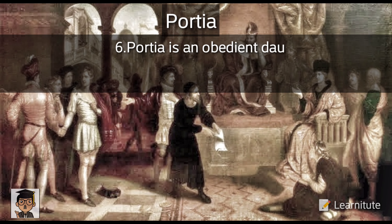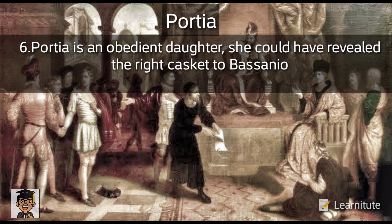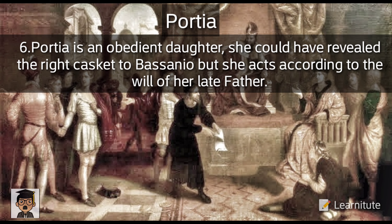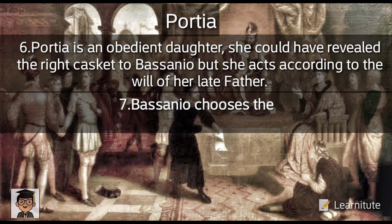We have to notice that Portia is an obedient daughter. She could have revealed the right casket to Bassanio, but she acts according to the will of her late father and does not give him a hint or tell him which is the right casket. Many suitors come and try their luck on the lottery of caskets, but no one can choose the right casket until Bassanio comes and chooses the right one, which is the lead casket.